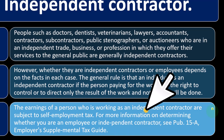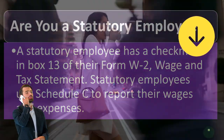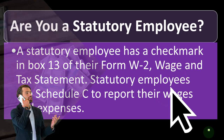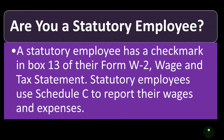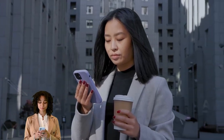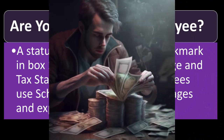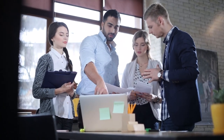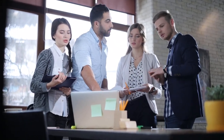The earnings of a person working as an independent contractor are subject to self-employment tax. For more information on determining whether you are an employee or independent contractor, see Publication 15-A, Employer Supplemental Tax Guide. A statutory employee has a check mark in box 13 of their Form W-2. Statutory employees use Schedule C to report their wages and expenses — this is a somewhat unusual situation where you're a W-2 employee but can also use Schedule C to report wages and expenses, potentially deducting expenses even though most W-2 employees don't get to deduct their expenses, since the idea is that the employer takes care of them. If you're a contractor, one of the benefits is that you get to deduct your expenses.